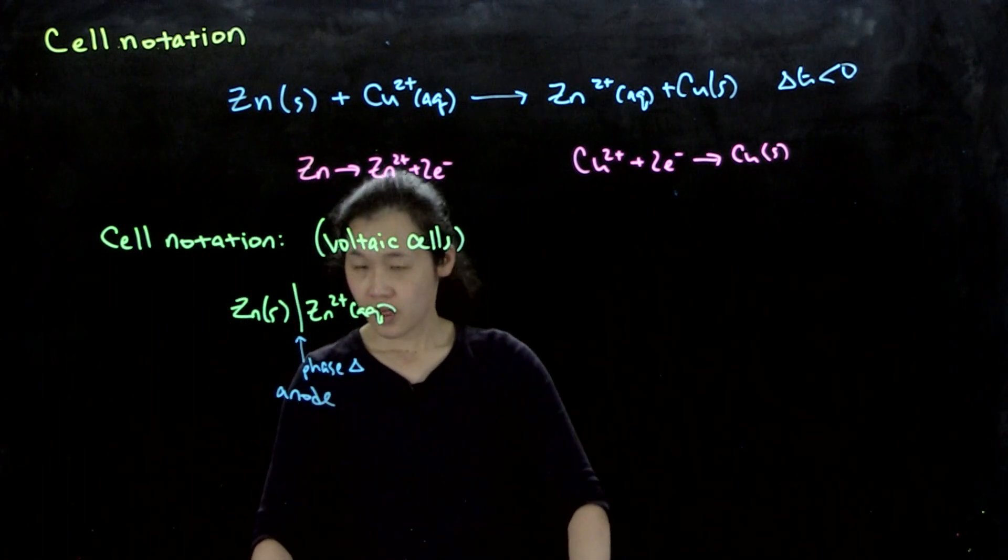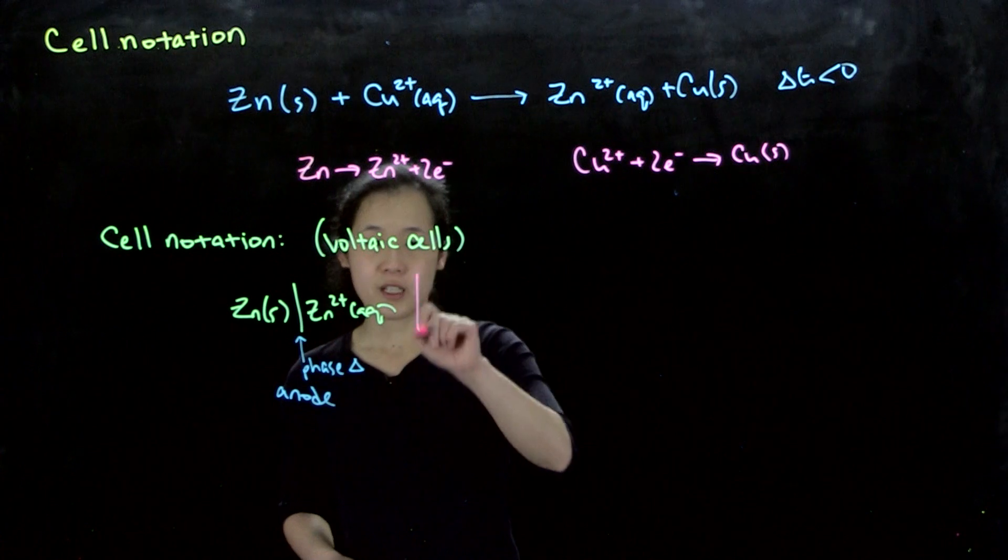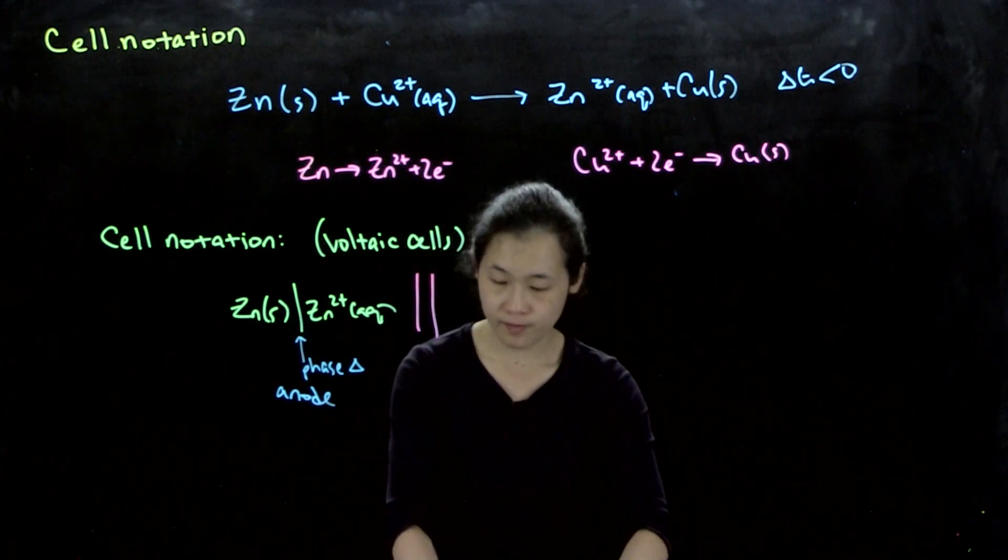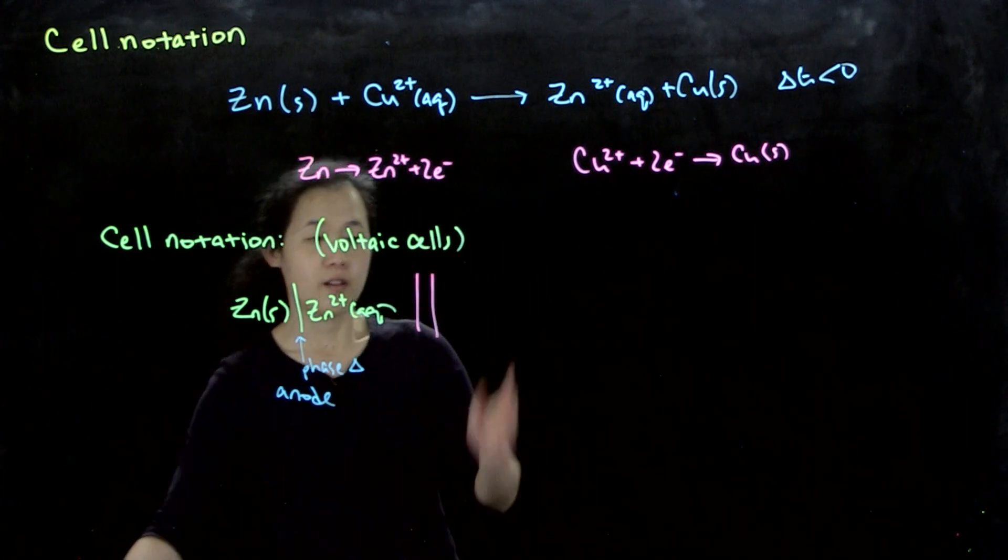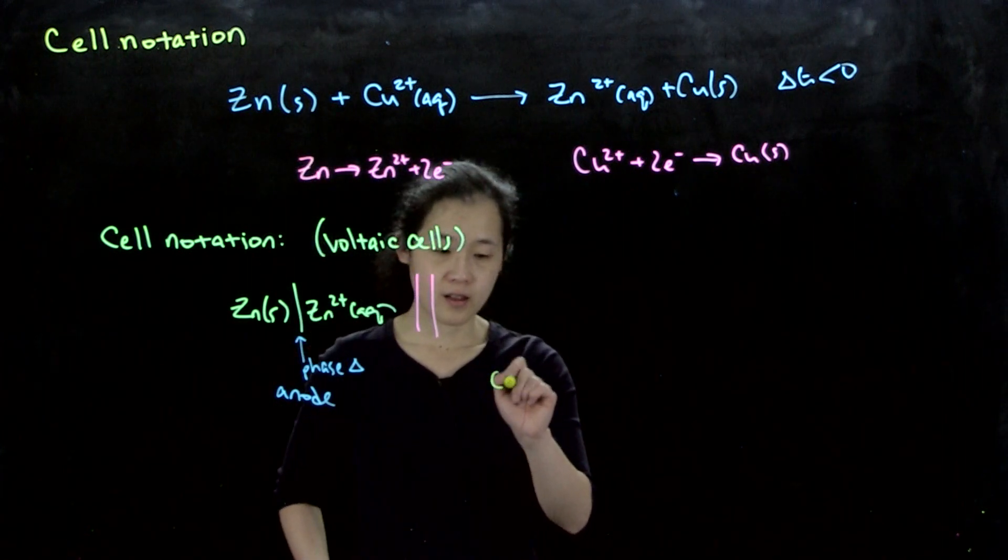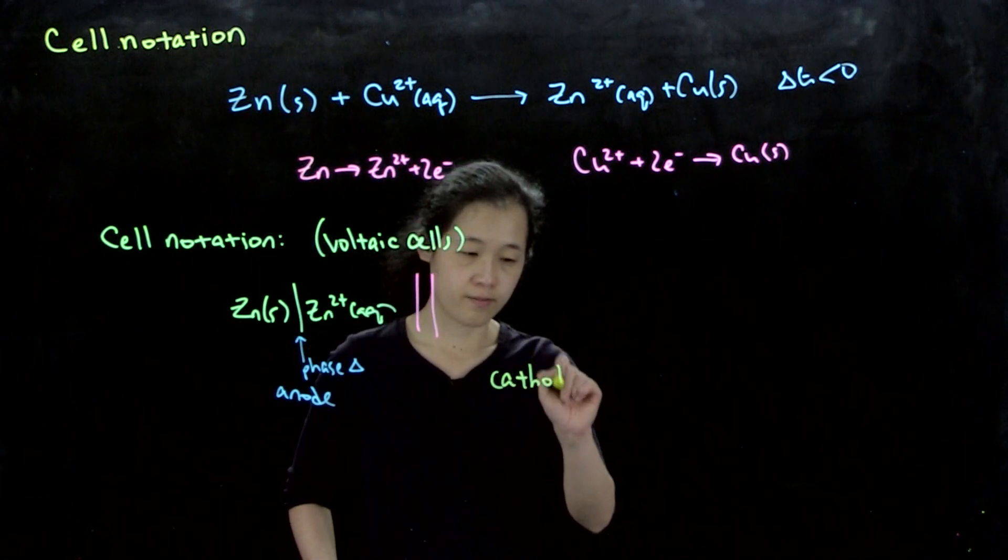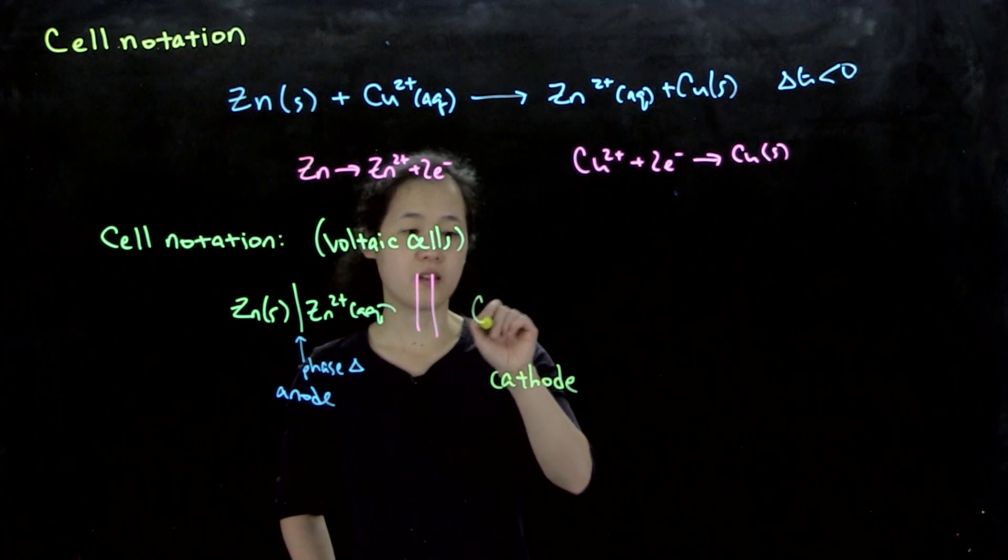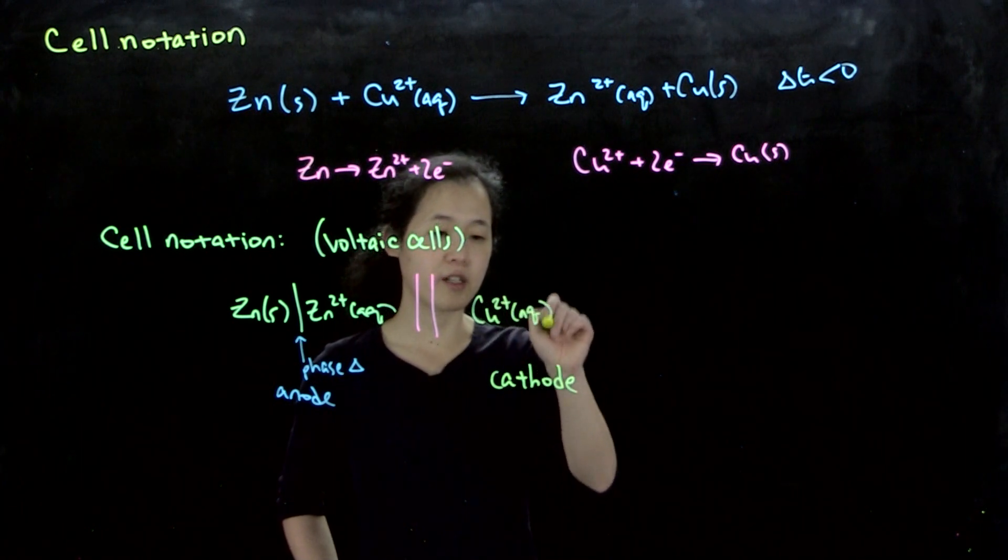Then we write the salt bridge, which is very important - if you don't have the salt bridge, it won't go. On the right side we have our cathode, which is the reduction.